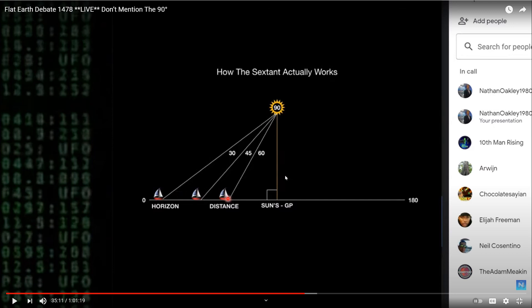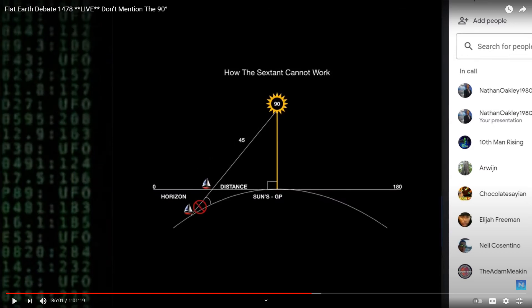All of these angles here form right triangles where the celestial body is at zenith above the surface of the Earth. And this point down here in celestial navigation is also called the GP or the ground position. And this drawing is their evidence that it can't work on a globe.